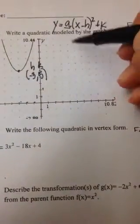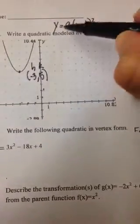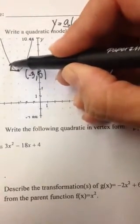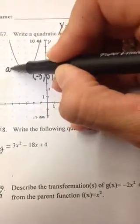The only variable left is a. We could pick a point and plug in for x and y, but the easiest way is just to look 1 away. I'm up 1, so a equals 1.